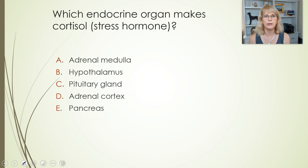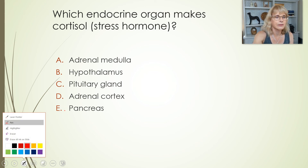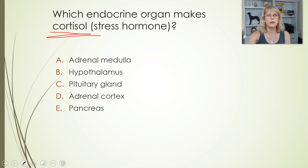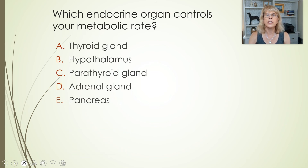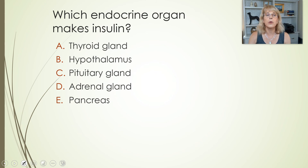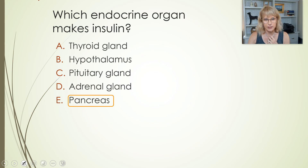Which endocrine organ makes cortisol? The name has the answer right there — cortisol comes from the adrenal cortex. Which endocrine organ controls your metabolic rate? Easy — that's the thyroid gland. Which endocrine organ makes insulin? We only barely touched on it, but the endocrine organ that makes insulin is the pancreas — technically the pancreatic islets.